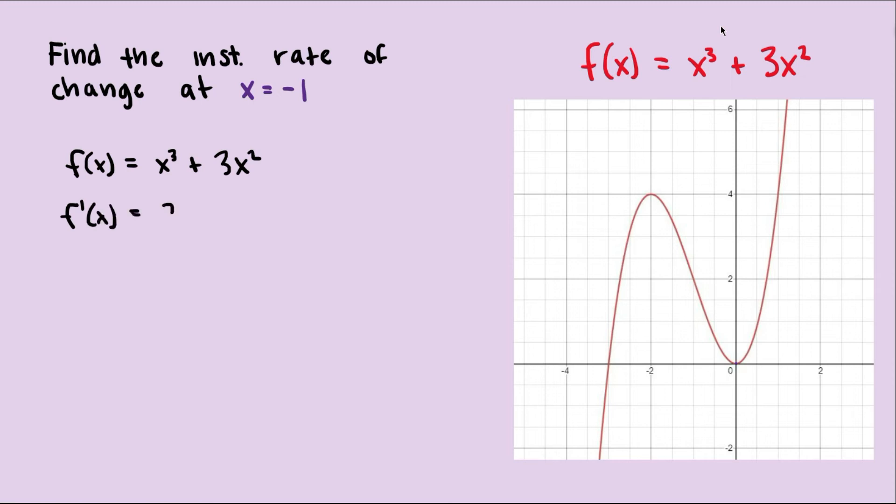Using the power rule, we get 3x squared plus 6x. So if we plug in negative 1, f prime at negative 1, we get 3 times negative 1 squared plus 6 times negative 1.